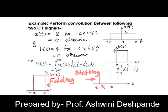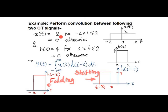Perform convolution between the given two continuous time signals. x is given as 2 between the interval minus 2 to 2 and is 0 otherwise, which is a rectangular function.